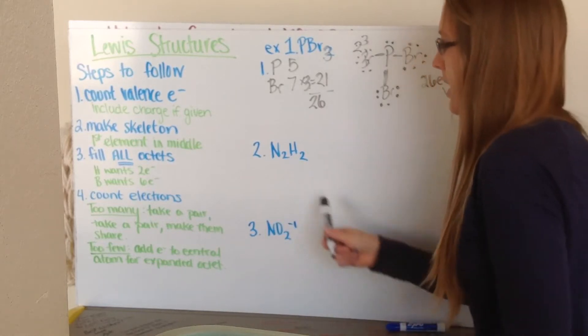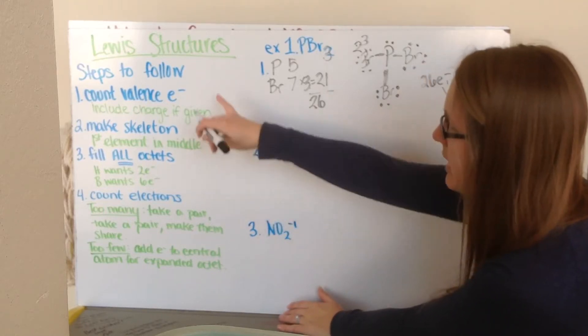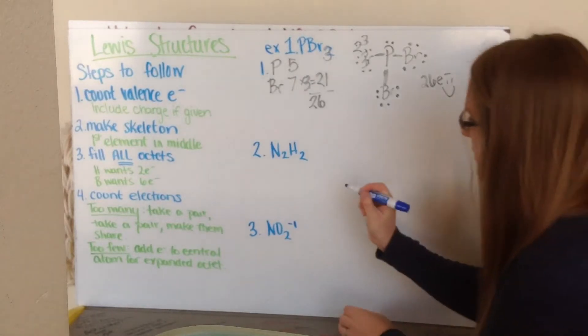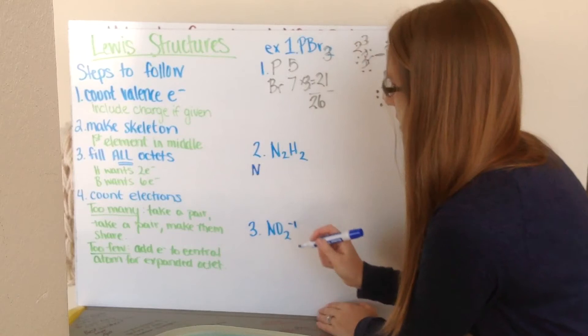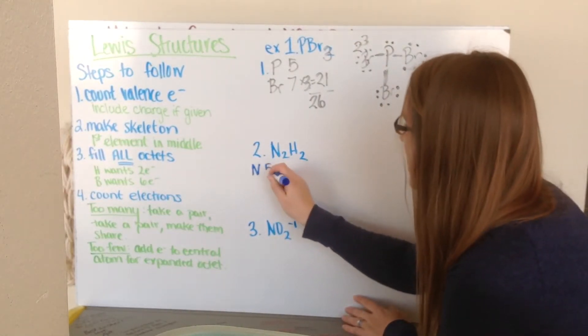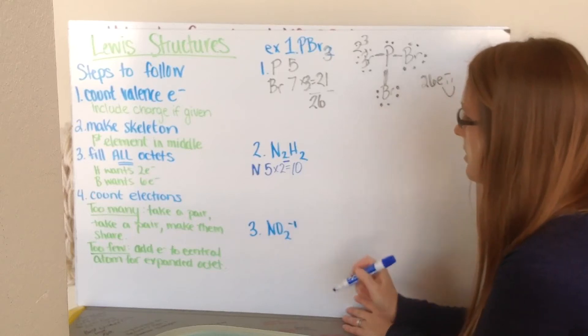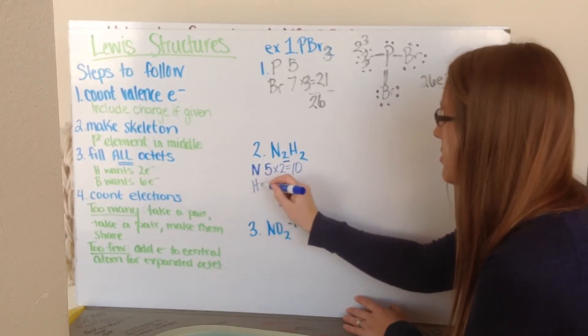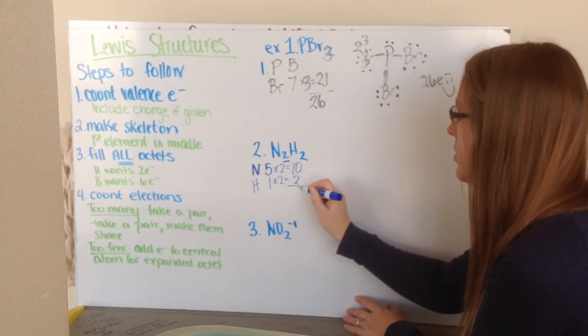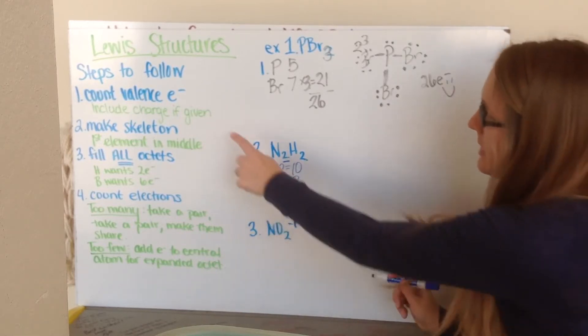So then I go on. My next example, I have N2H2, so dinitrogen dihydride. So again, I start by first counting my valence electrons. Nitrogen, I look on my periodic table, and that again is in group 5, so it has 5 electrons. I have 2 nitrogens, so I need to multiply that times 2, 10 electrons from nitrogen. And then I have my hydrogen, hydrogens in group 1. I have 2 of them, so that's 2 total electrons from hydrogen. So I add them together, and I have 12 electrons to play with.